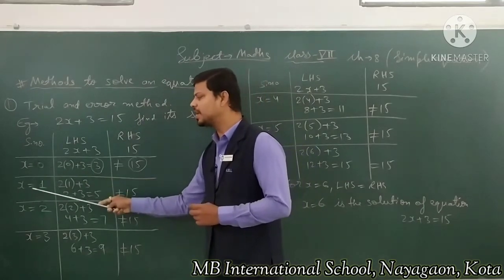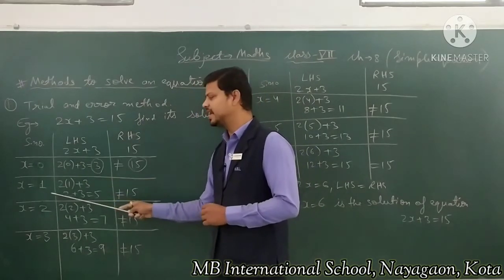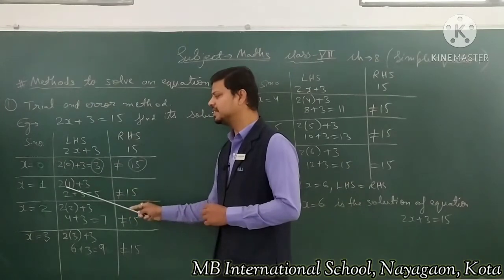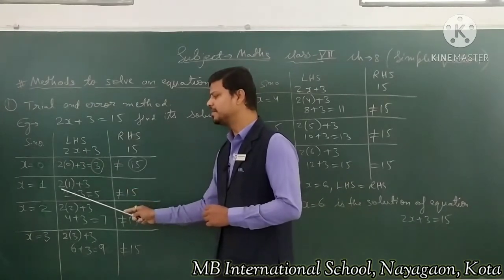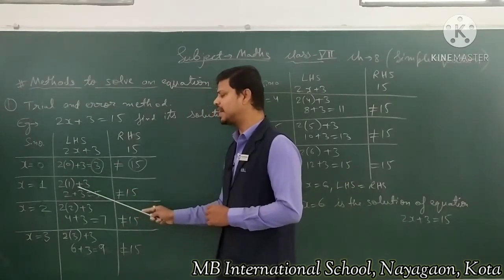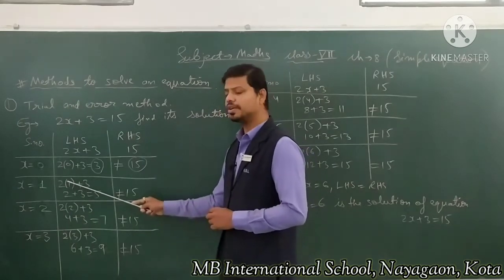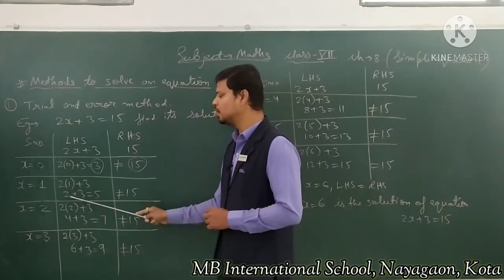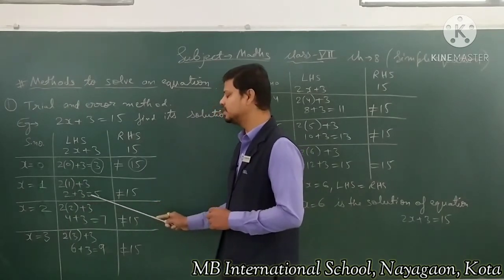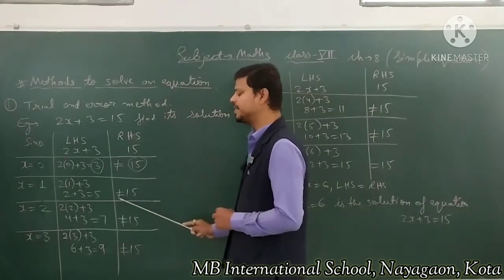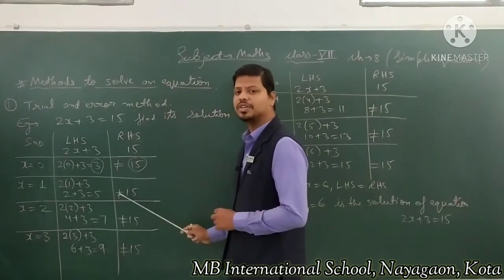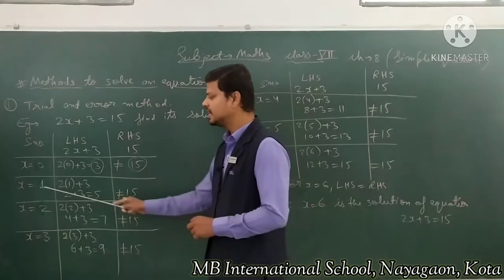Next, we put x = 1 in the LHS. So 2 × 1 + 3: 2 × 1 = 2, and 2 + 3 = 5. Is 5 equal to 15? No, 5 is not equal to 15. We proceed further.